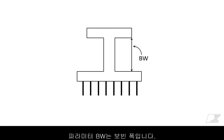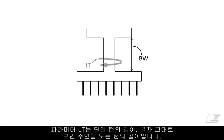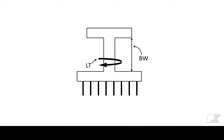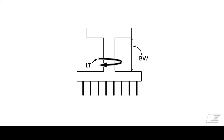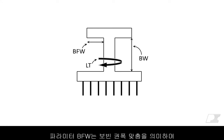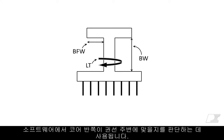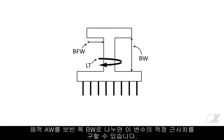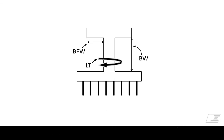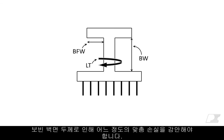Parameter BW is the bobbin width. Parameter LT stands for length of a single turn and is literally the length of a turn going around the bare bobbin. This parameter is used in estimating the copper losses in the windings. The parameter BFW is the bobbin fit inside the window and is used by the software to determine whether or not the core halves will fit around the windings. Many times this parameter is not listed in datasheets and should be manually measured. A reasonable approximation of this variable is made by dividing the window area AW by the bobbin width BW, allowing for some loss of fit because of the thickness of the bobbin walls.